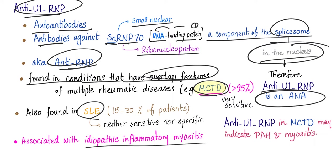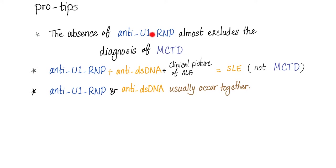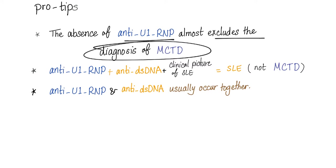In lupus patients, anti-U1 RNP is present in only 30–50% of patients, so by definition it's not sensitive. Since it's also positive in mixed connective tissue disease, it's not specific either. Anti-U1 RNP can be associated with mixed connective tissue disease — in which case it's very sensitive — or with systemic lupus erythematosus, in which case it's neither sensitive nor specific. The absence of anti-U1 RNP almost excludes the diagnosis of mixed connective tissue disease, because it's very sensitive for that condition.